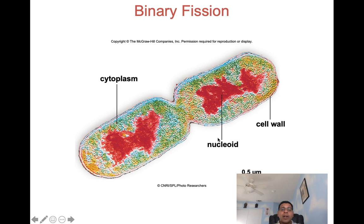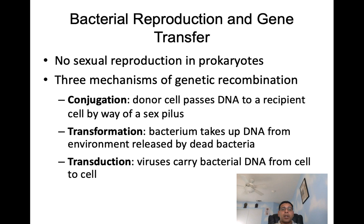There is no sexual reproduction in prokaryotes, but there are three mechanisms of genetic recombination. First, conjugation, where the donor cell passes DNA to a recipient cell by way of a sex pilus. Second, transformation, where the bacterium takes up DNA from the environment released by dead bacteria. And third, transduction, where viruses carry bacterial DNA from cell to cell.